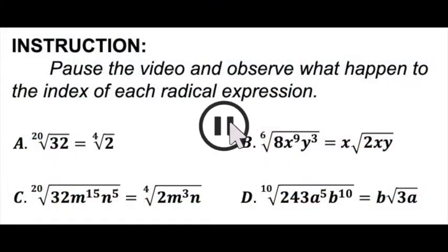To start our lesson, I have here a series of radical expressions with their corresponding simplified forms. Pause the video and try to observe what happened to the index of each radical expression. As you can see, the index of each radical expression has been reduced. On radical expression a, from the 20th root, it was reduced to the 4th root. Expression b, from the 6th root, it was reduced to the square root. Expression c, same as expression a. And expression d, it was reduced from the 10th root to the square root.